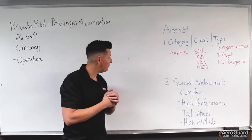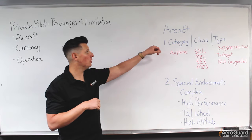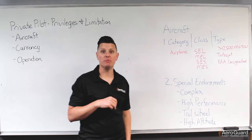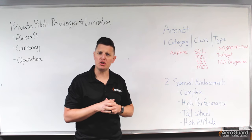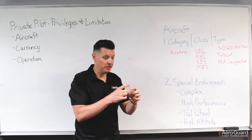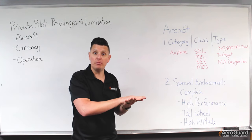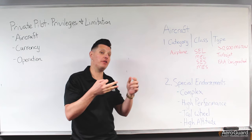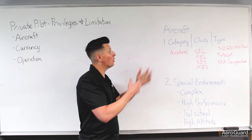First up is the aircraft. I want to divide that into two different groupings. First we're going to talk about aircraft category, class, and type, and then we'll talk about some of the special endorsement pieces. When we receive our private pilot certificate, we get this little green card and on the front it just says 'private pilot.' On the back, we identify what particular category and class aircraft, along with any type ratings, are associated with that certificate — which means which aircraft we're allowed to operate.